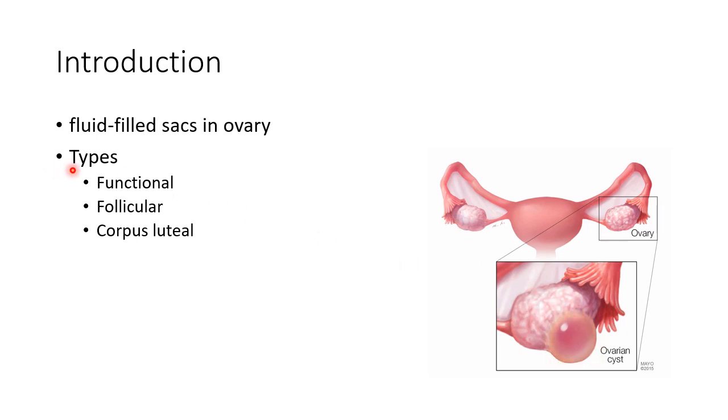What are the types of ovarian cysts? There are three types of ovarian cysts: functional ovarian cysts, follicular ovarian cysts, and corpus luteal cysts.